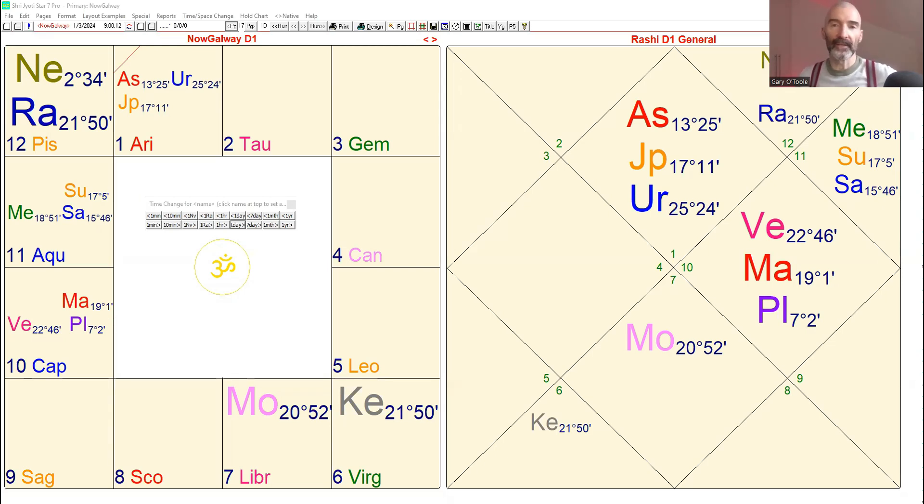Hello everyone, Gary here from Timeline Astrology. This is the forecast for March 2024. So let's get into the transits you see here, the South and North Indian style layouts.